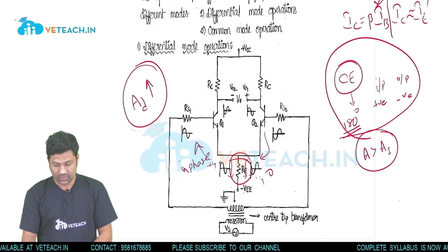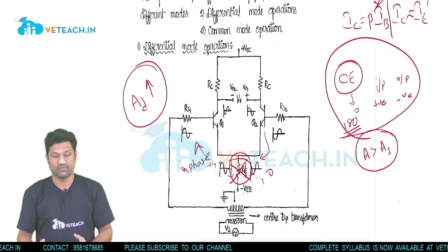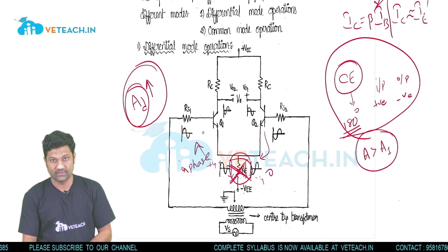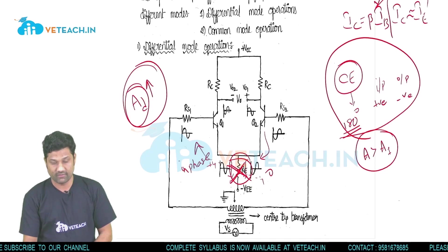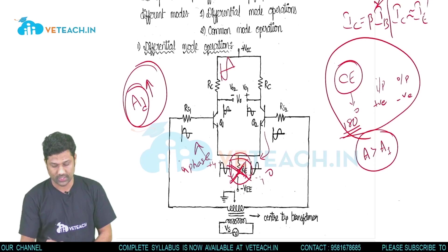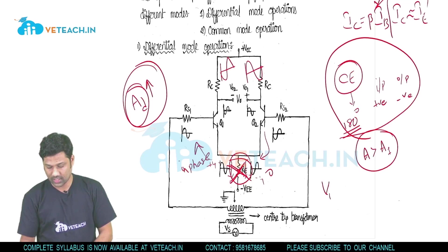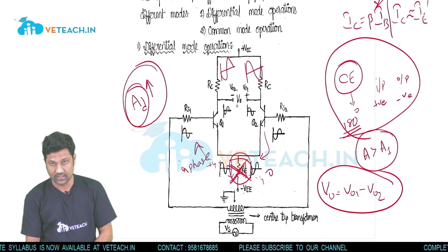Since there is no signal flowing through RE in differential mode operation, RE is neglected when calculating the value of Ad. For the output, there is a 180-degree phase shift between input and output. Q1 receives a positive and negative going signal, so its collector output is a negative and positive going signal. Q2 receives a negative and positive going signal, so its collector output is a positive and negative going signal.